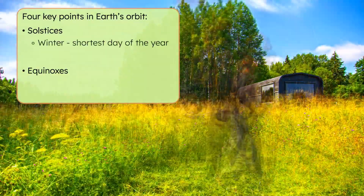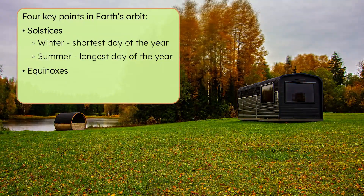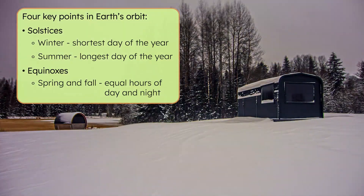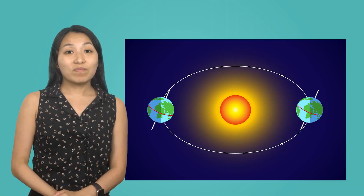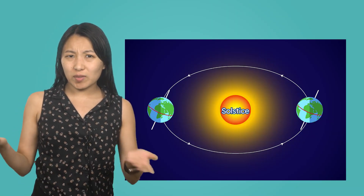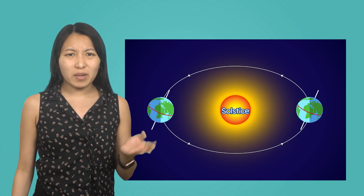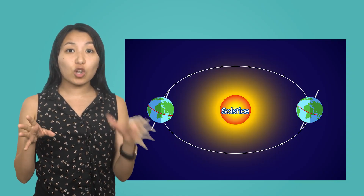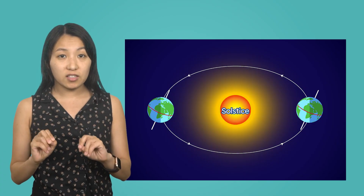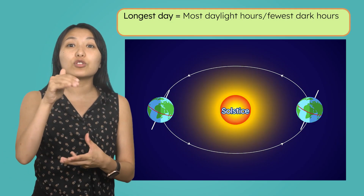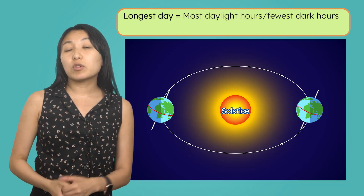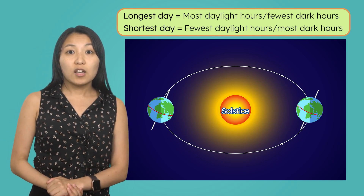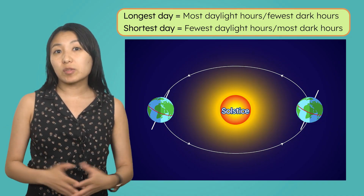The solstices happen in winter and summer, and they mark the longest and shortest days of the year. The equinoxes happen in spring and fall, and mark when the day has equal amounts of day and night. A day is always 24 hours long, but the split between daylight and darkness within those 24 hours changes. The longest day happens when a hemisphere is most tilted toward the sun, giving the most daylight hours and fewest hours in darkness, while the shortest day happens when a hemisphere is least tilted toward the sun, giving the fewest daylight hours and most hours in darkness.